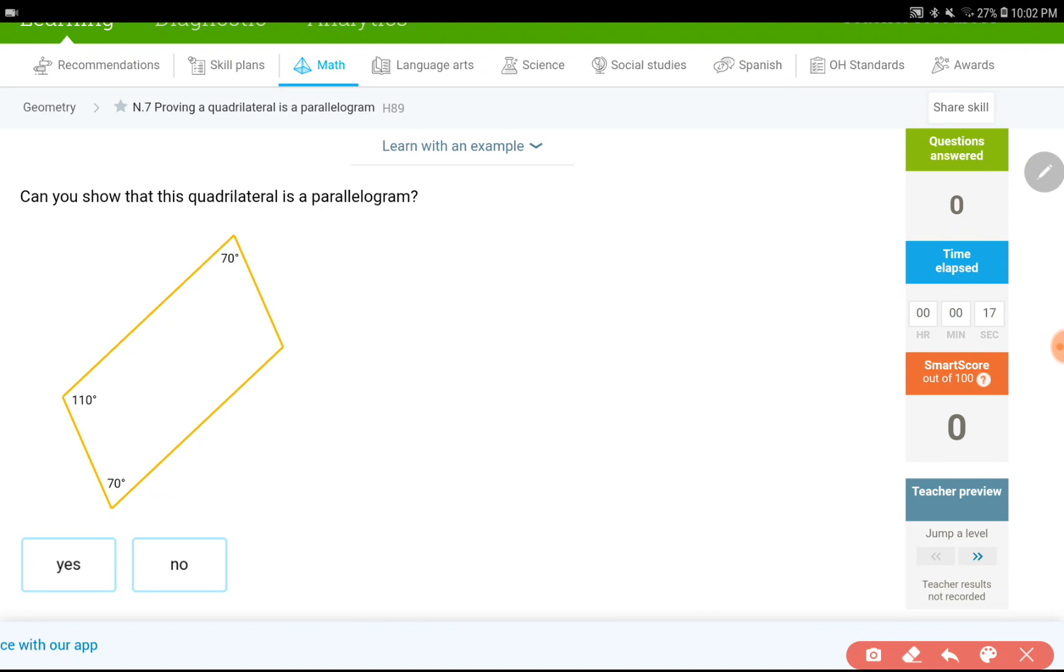So the assignment is on IXL N7, it's proving a quadrilateral is a parallelogram. It has the word proving in it but it has nothing to do with proving anything at all. The first question says,